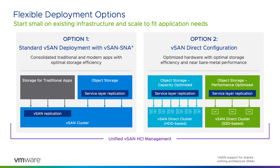Option 2, vSAN Direct Configuration, also takes advantage of the availability, efficiency, and security features built into the modern stateful service layer. But instead of being part of an existing vSAN cluster, there is direct access to the underlying attached hardware for optimal storage efficiency and near bare metal performance. This option is ideal for purpose-built deployments where the underlying hardware can be optimized for workload requirements, such as dense S3-compatible object storage for archival or performance-sensitive apps like big data and advanced analytics.